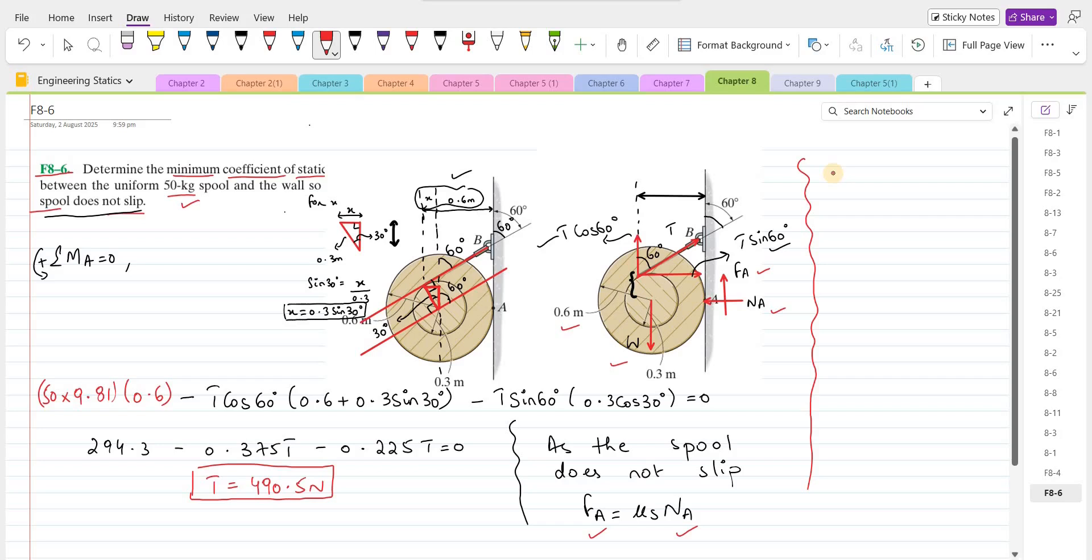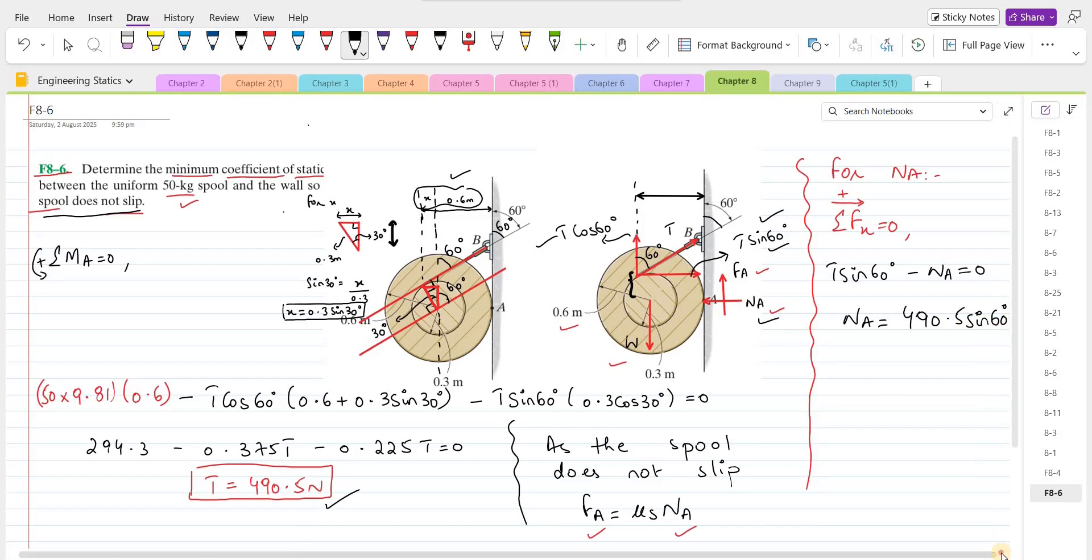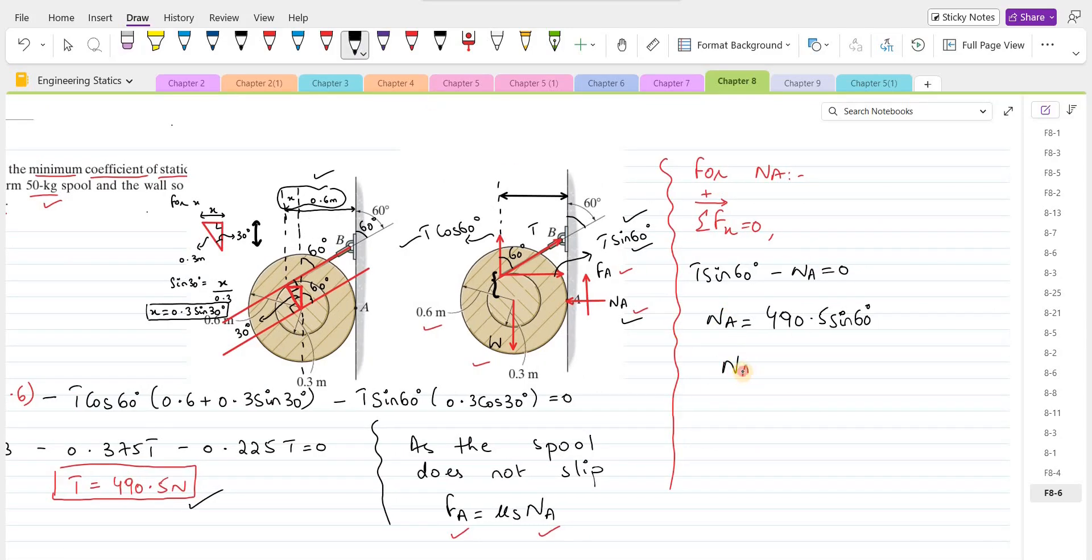For NA, we can do summation of forces in x direction equals to 0. I am considering right hand side as positive. So we have T sine 60 minus NA equals to 0. So NA is T sine 60, and T is 490.5 newtons times sine 60. So NA comes out to be 424.8 newtons.